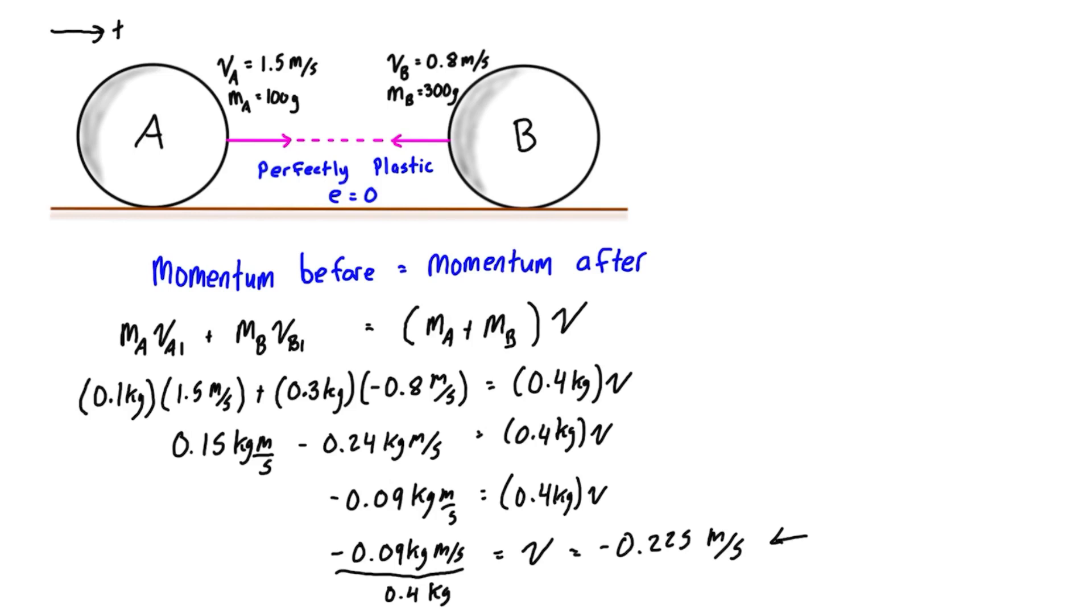That negative sign indicates that it is going to the left. If you were just asked to find the velocity after the impact, then you are done. You can put a box around the answer—that is the combined velocity for A and B together moving as one object.